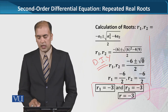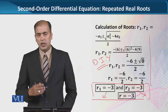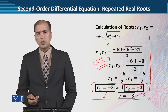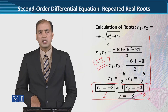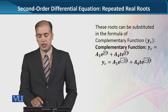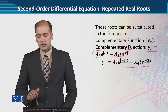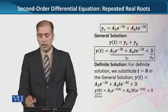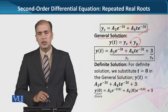Slightly نئی بات یہ ہے کہ roots اس طریقے سے appear ہو رہے ہیں کہ وہ دونوں equal ہیں - r1 is equal to r2, both equal to minus 3۔ جب ہم نے yc کے formula میں یہ substitution کی تو formula اس طریقے کی form میں بن گیا۔